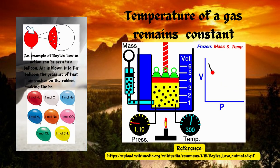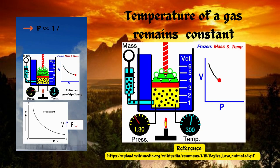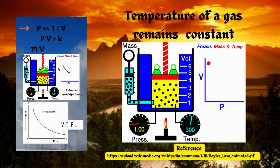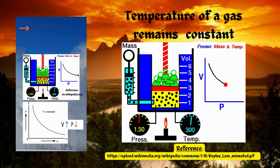Air is blown into the balloon, the pressure of that air pushes on the rubber, making the balloon expand. PV equals K. P1V1 equals P2V2.